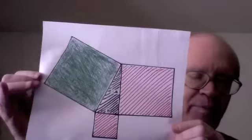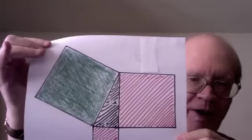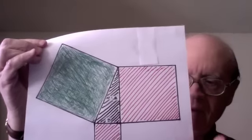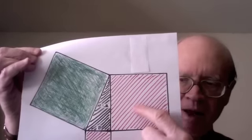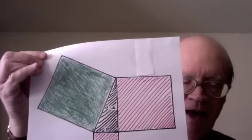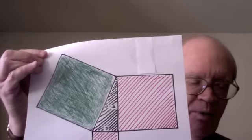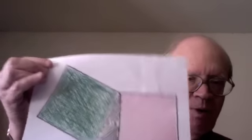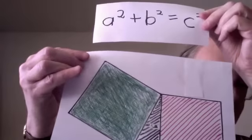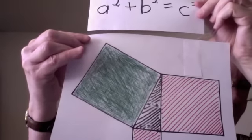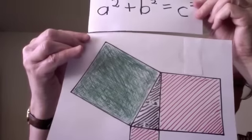Here are the squares built on the sides of one of those right triangles. This area plus this area equals this area. That's it. A squared plus B squared equals C squared. So that's a demonstration of the truth of the Pythagorean equation.